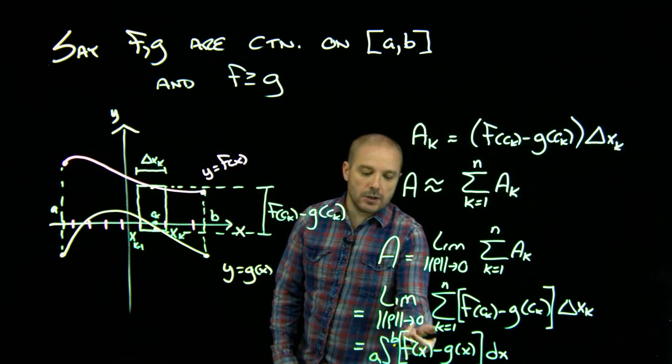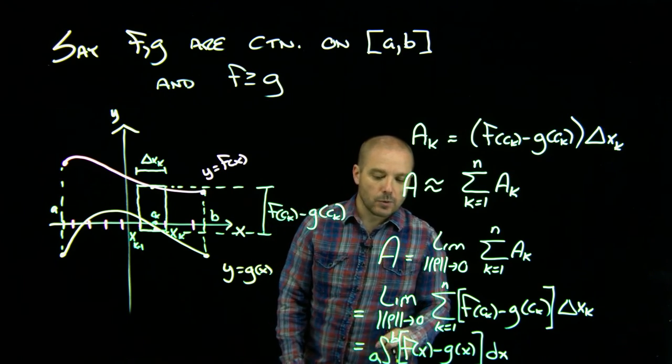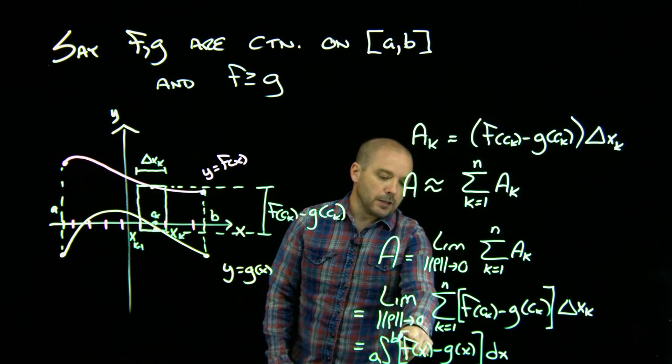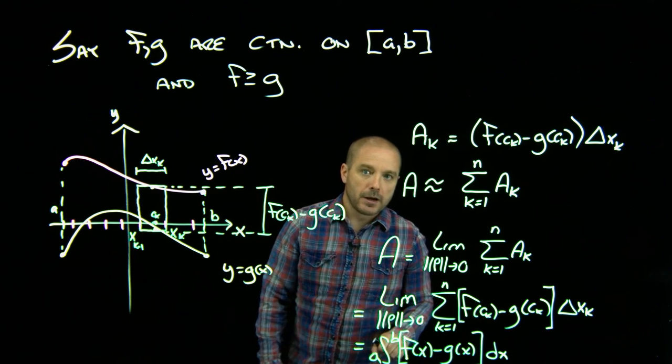So, so long as these are continuous functions and f is the larger one, the area between them is simply the integral from a to b of the larger function minus the smaller function.